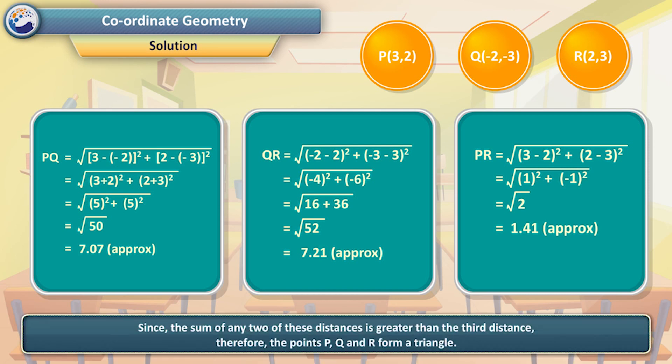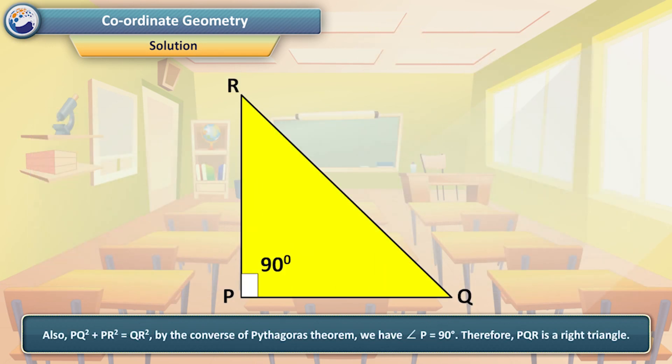Since the sum of any two of these distances is greater than the third distance, the points P, Q, and R form a triangle. Also, since PQ² + PR² = QR², by the converse of the Pythagoras theorem, angle P = 90°. Therefore, triangle PQR is a right triangle.